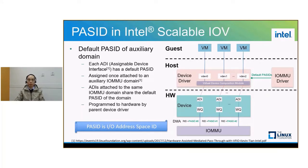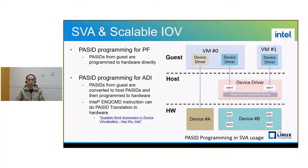This is also the base of PASID management in software. Since SVA and scalable IOV are both based on PASID, can they co-exist? The answer is yes, since they are orthogonal IO technologies. For example, we can set up guest SVA on assigned ADIs. The guest just needs to follow the normal steps for SVA setup. However, there is still a difference in PASID programming between physical functions and ADIs. For physical functions, PASIDs from the guest are programmed to hardware directly. While for ADIs, PASID programming should be mediated by host.